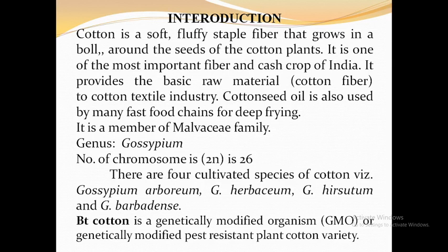The four cultivated species are Gossypium arboreum, Gossypium herbaceum, Gossypium hirsutum, and Gossypium barbadense. Gossypium arboreum is an Indian cotton called Desi kapas. It has a shattering problem. Gossypium hirsutum is an American cotton also called Narma, where Narma means soft.